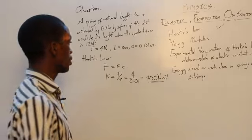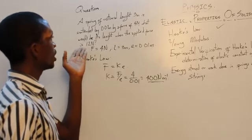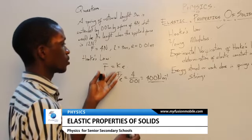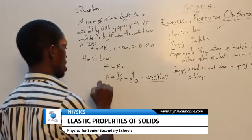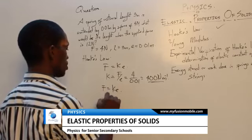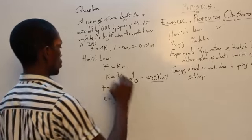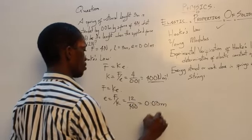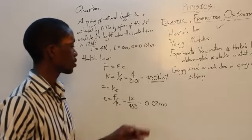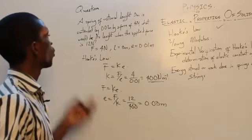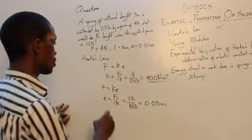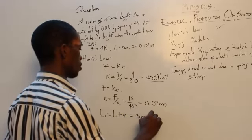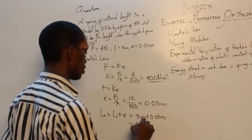With this information we can calculate what the new length would be when a force of 12 newtons is applied. First we calculate the extension at 12 newtons: E equals F divided by K, which is 12 divided by 400, giving us 0.03 metres. But that's the extension, not what we're asked to find. The new length would be the old length plus the extension: 3 metres plus 0.03 metres, giving us 3.03 metres.